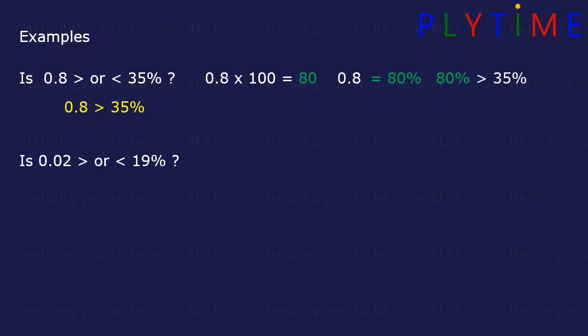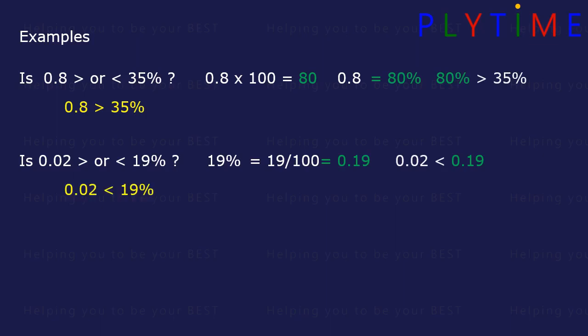Let's look at another one. Is 0.02 greater than or less than 19%? Let's change the percentage to a decimal. 19% is the same as 19 over 100, or 19 hundredths, which is 0.19. 0.02 is less than 0.19, so we can say 0.02 is less than 19%.